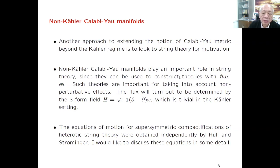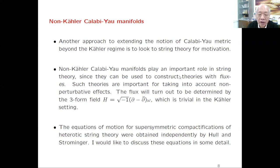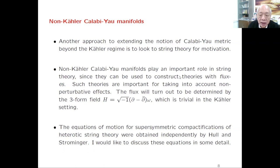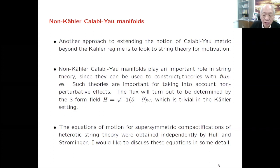This metric can be used to construct string theory with flux, which are important for taking into account non-perturbative effects. The flux that physicists discuss is determined by a simple 3-form H, which is d minus d-bar of the Hermitian form omega. This is trivially identically zero in the case of a Kähler manifold, but in the non-Kähler case it can be nonzero, giving rise to flux—one of the reasons physics is interested here.